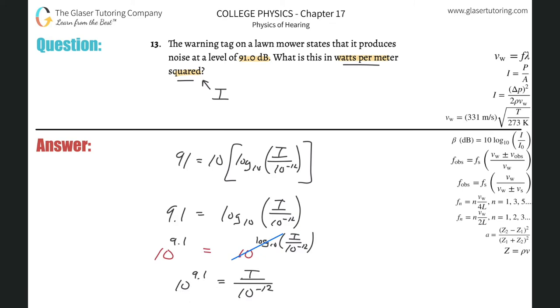And if you notice now, I can simply do a little cross multiplication. Or you can just simply notice that you're multiplying the same bases, so therefore you can add those exponents together. You take 9.1 and add it to negative 12.